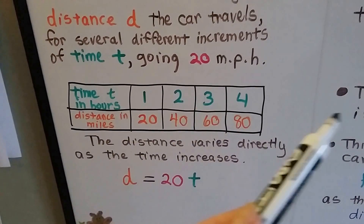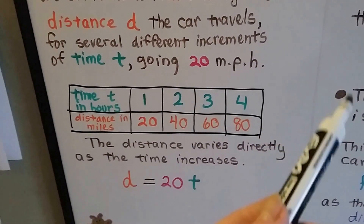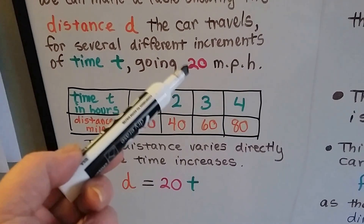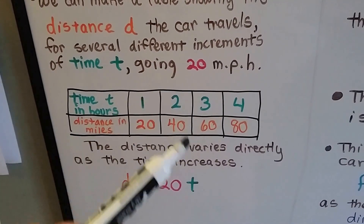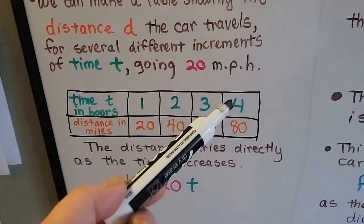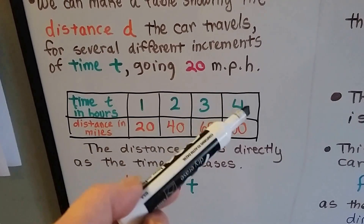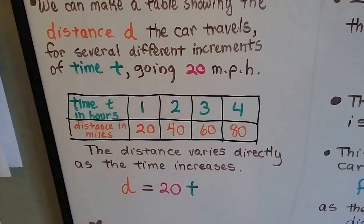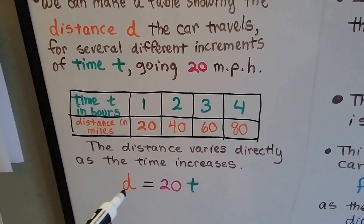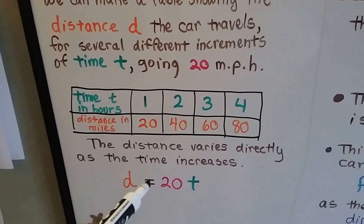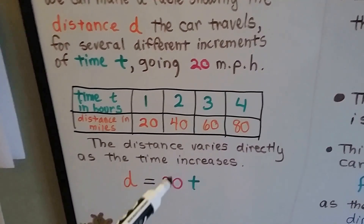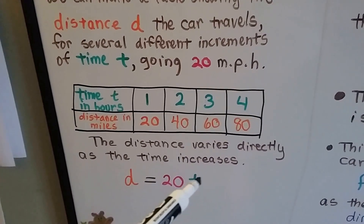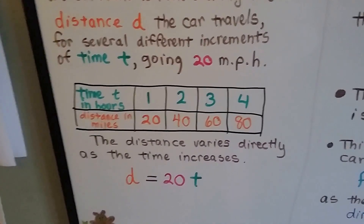We could keep going — 5, 6, 7, 8 hours. And because this is constant, we could just multiply these: 20 times 4, 20 times 5, 20 times 6. So the distance is going to equal that constant 20 miles per hour times the amount of hours, the time.